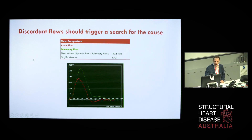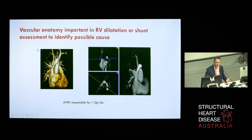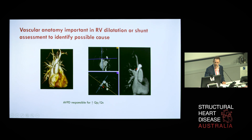Discordant flows should trigger a search for the cause. In this particular case, there's marked discordance between calculated aortic and pulmonary flow with a QP to QS of 1.92, in a patient with a previously dilated right ventricle on echo. Following gadolinium administration, a magnetic resonance angiogram revealed partial anomalous pulmonary venous drainage to the superior vena cava, appreciated on multi-plane reconstruction and in three dimensions. This demonstrates the power of the modality — we acquired all this information and answered the diagnostic question.